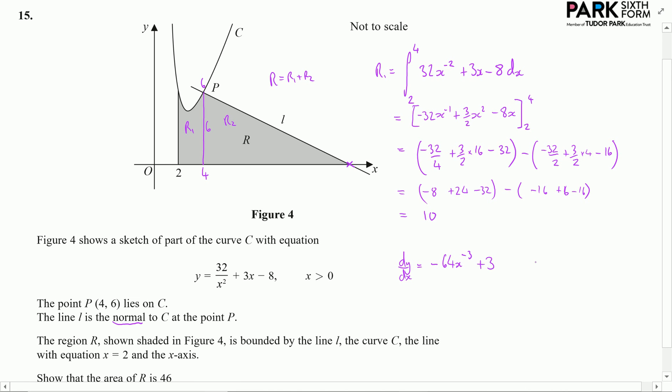What do I want to do? I want to find the gradient, so dy by dx evaluated at the specific point where x equals 4, which is going to give me negative 64 over 4 cubed, which is also 64, then add on 3. That gives me minus 1 plus 3, which turns out to be 2.